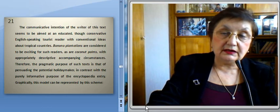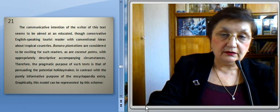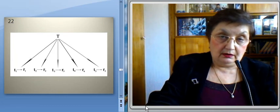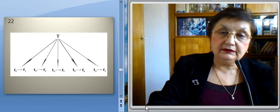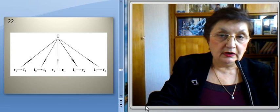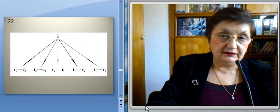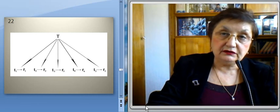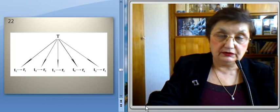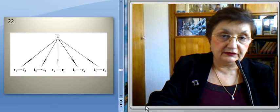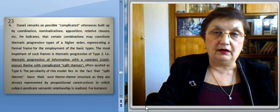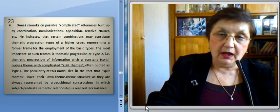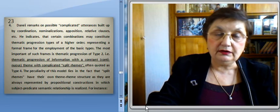The capital letter T at the top indicates the hyper-theme, which in the text is represented by the toponym St. Vincent, whereas the arrows point to the constituent micro-themes, each having its own rheme or rhematic complex. Daneš remarks on possible complicated utterances built up by coordination, nominalizations, apposition, relative clauses, etc. He indicates that certain combinations may constitute semantic progression types of a higher rank, representing a formal frame for the employment of the basic types.